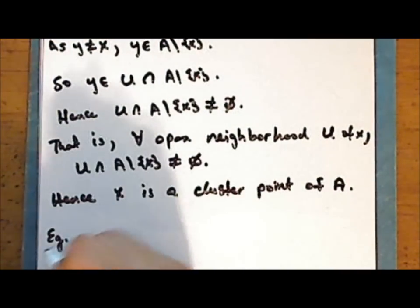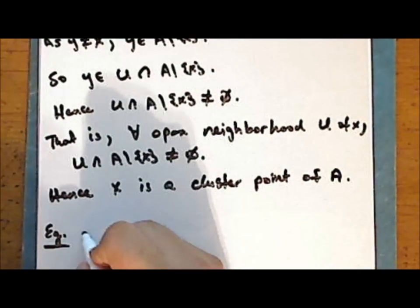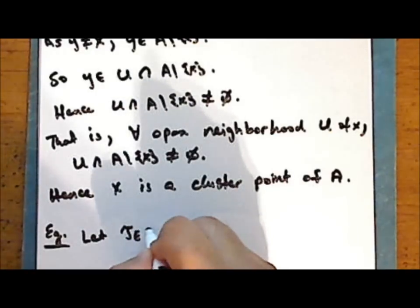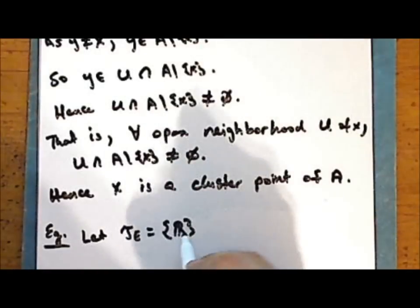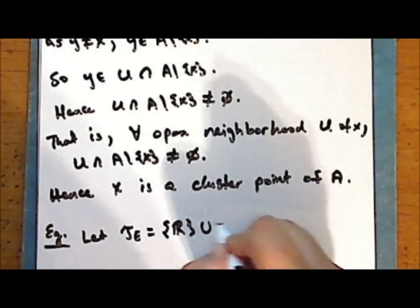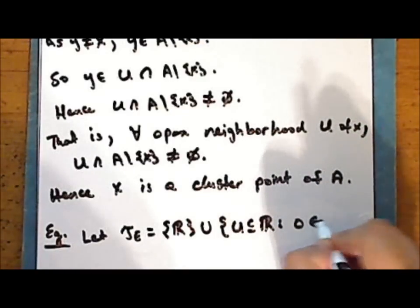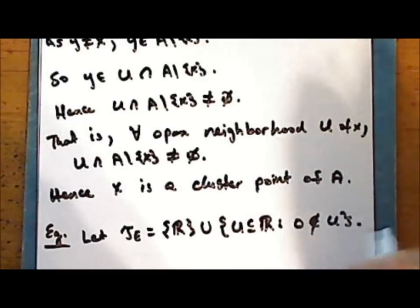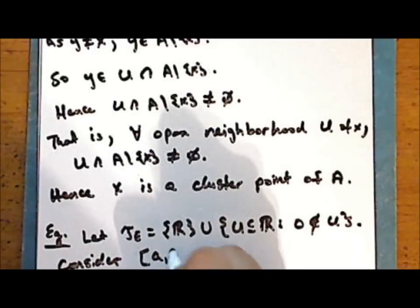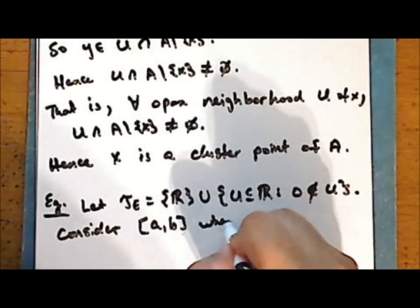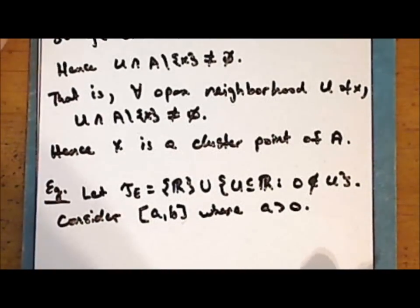Next, we will look at one of the other exercises set in the last lecture. Let tau_e be the set containing the entire set of reals together with all subsets of the reals such that the number 0 is not in that subset. We will consider the interval from A to B inclusive of A and B, where A is strictly greater than 0. So this is an open subset in this topology.